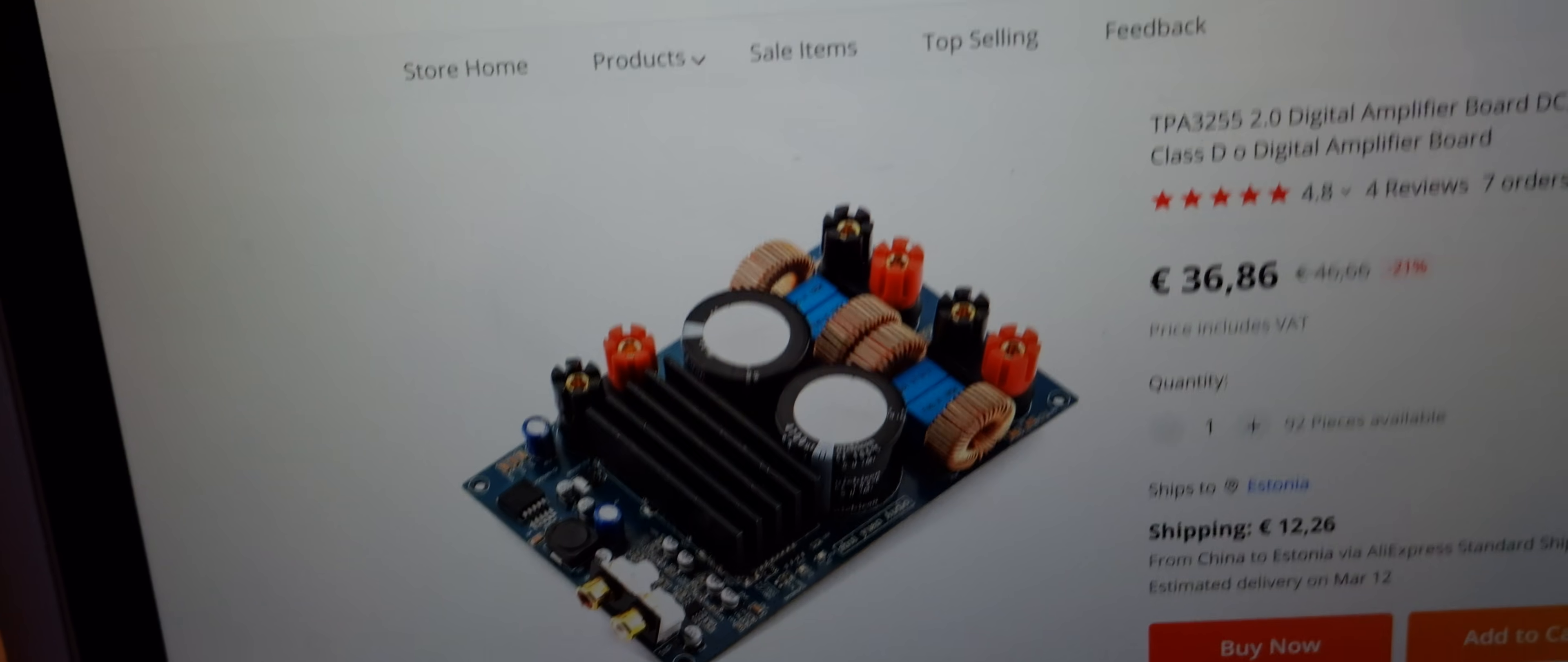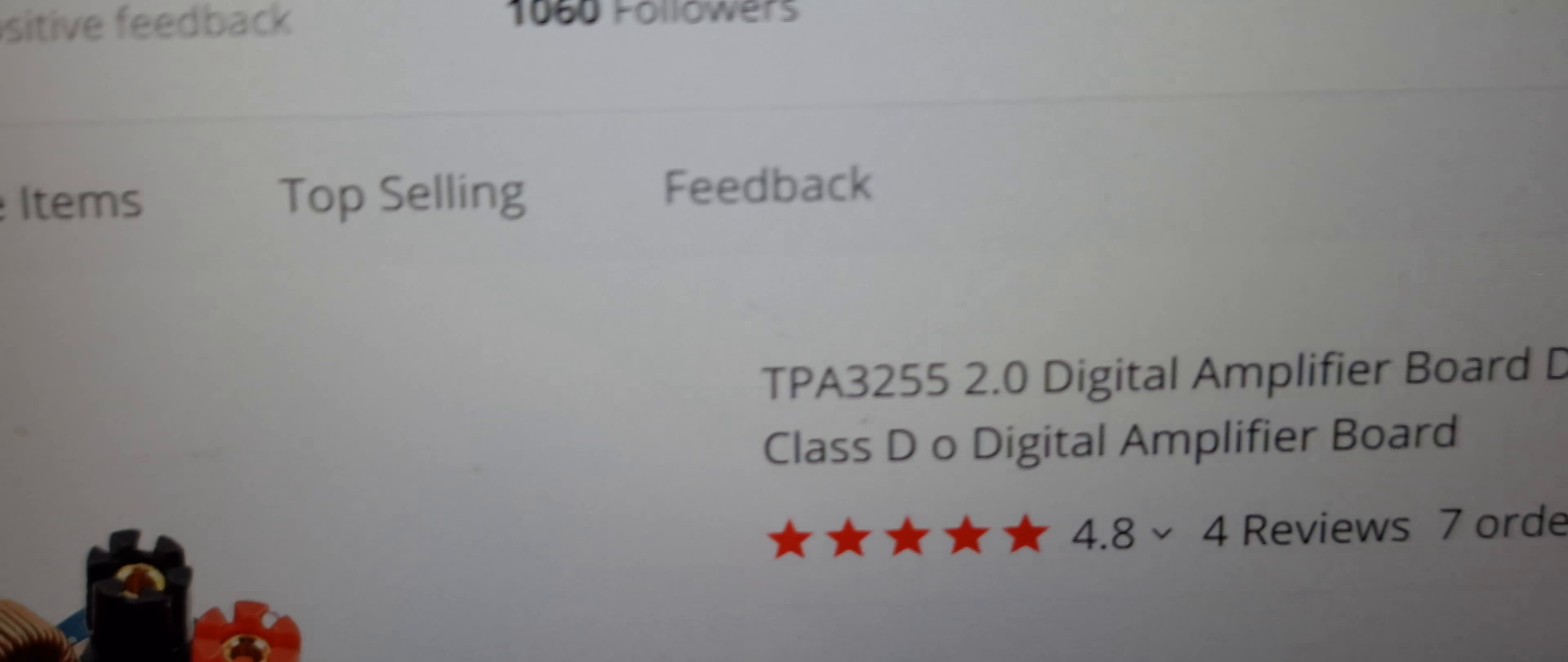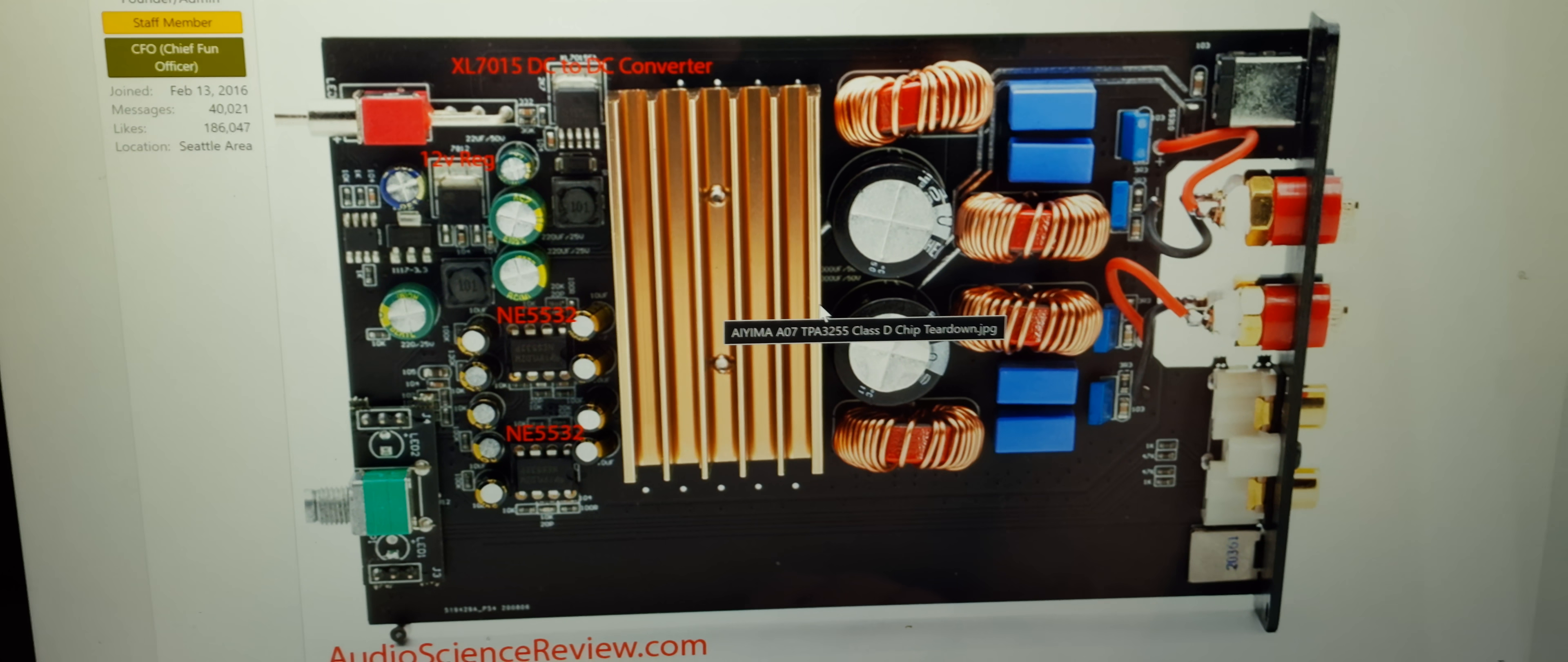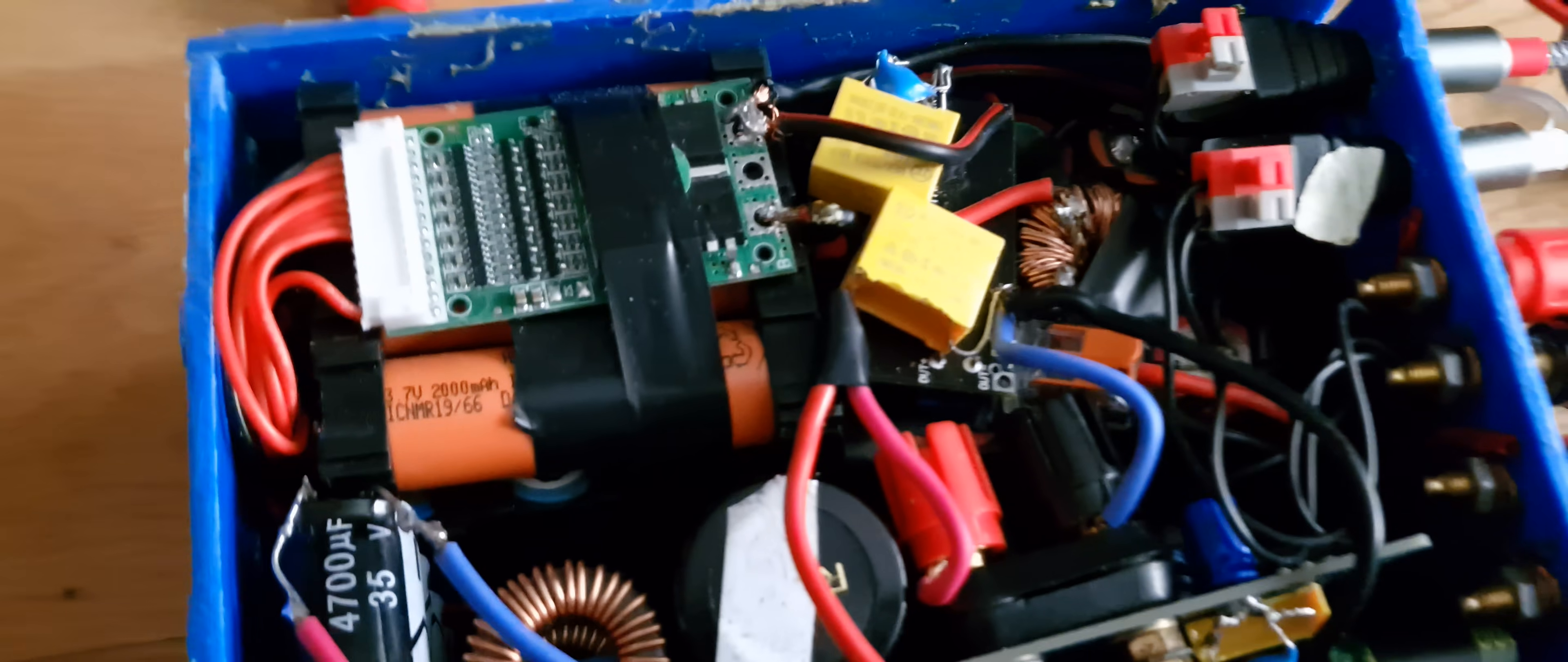So I have this amplifier board, it's only an amplifier, it doesn't have any DACs. This is DC voltage from 24 to 42 volts and this is speaker output and this is RCA input. So this is an AIMA board and it's using the same chip, TPA 3255, so those boards are quite the same. So this is a portable amplifier I made.